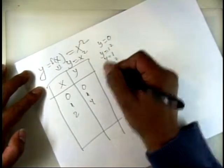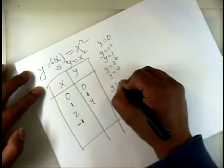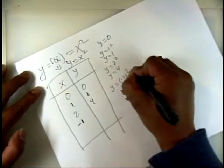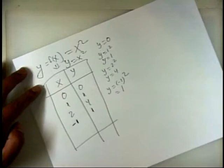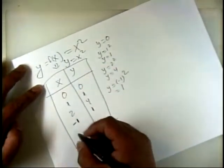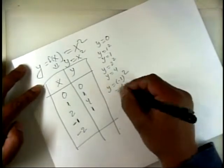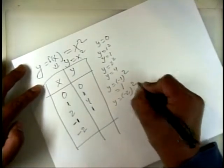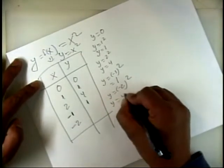Now let's pick x equal to negative 1. So y equals negative 1 squared, which gives you 1. And let's pick x equal to negative 2, y equals negative 2 squared, which equals 4.